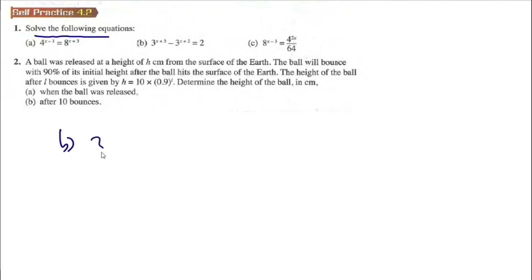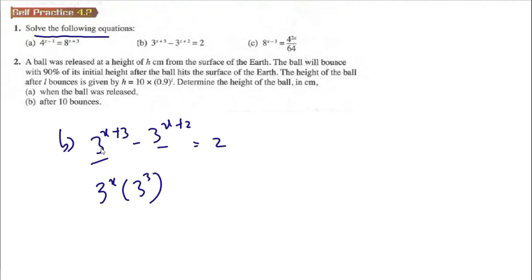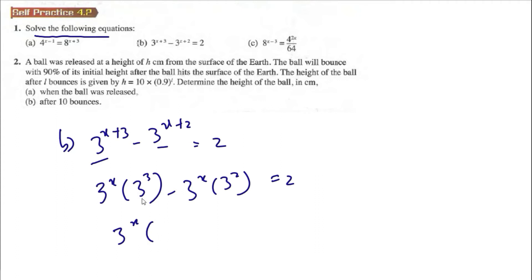For part b: 3^(x+3) minus 3^(x+2) is equal to 2. We can factor out 3^x. Since 3^(x+3) = 3^x times 3^3, and when we multiply the same base we just add the powers, so we factor out 3^x giving 3^3 minus 3^2.